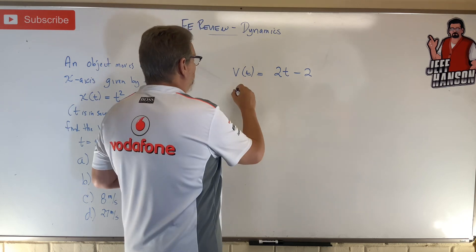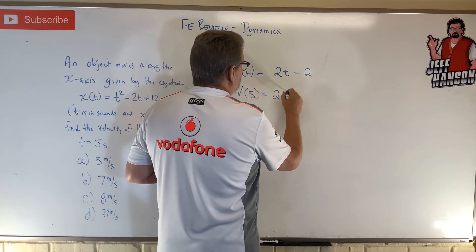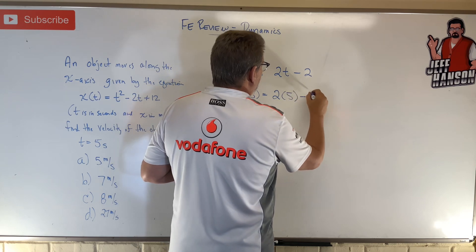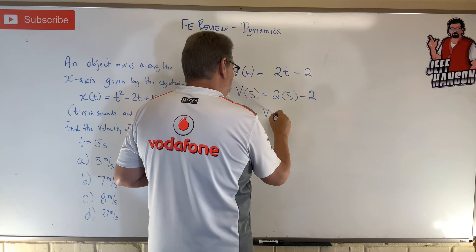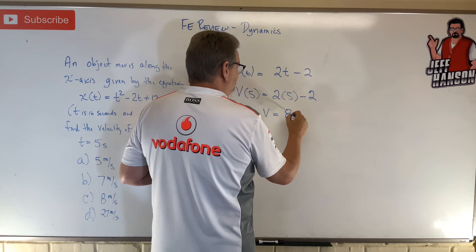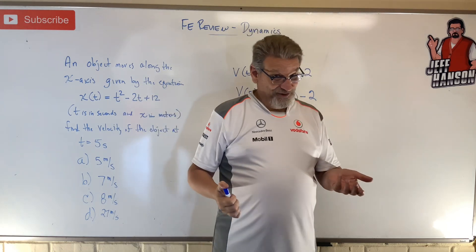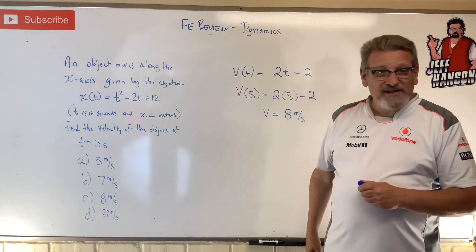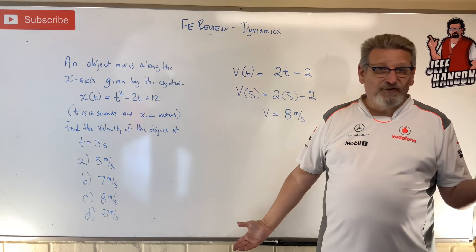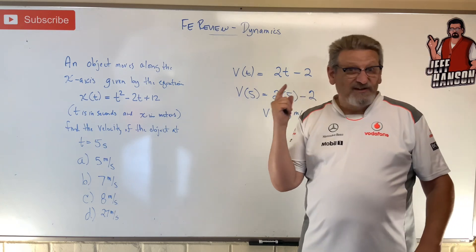And then all we got to do here is put a 5. So velocity of 5 equals 2 times 5 minus 2. That's 10 minus 2. V equals 8 meters per second, and that's all there is to that. I mean, that's answer C. Should just guess C in the first place, right? All right, hope that helps. Let's do another one.